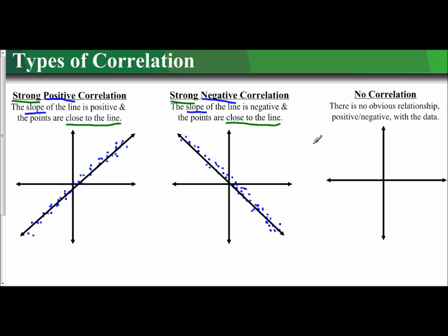We also have something that's called no correlation. There's no obvious relationship between the data. And what this looks like is your points are randomly sporadic all across the xy-axis.